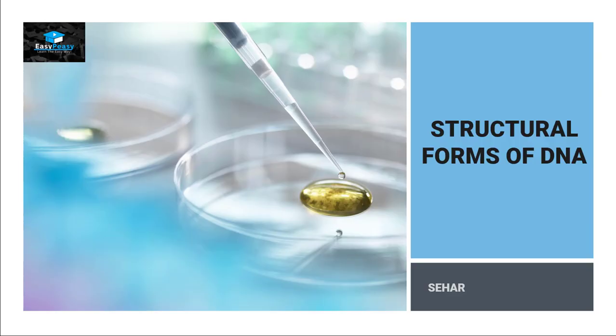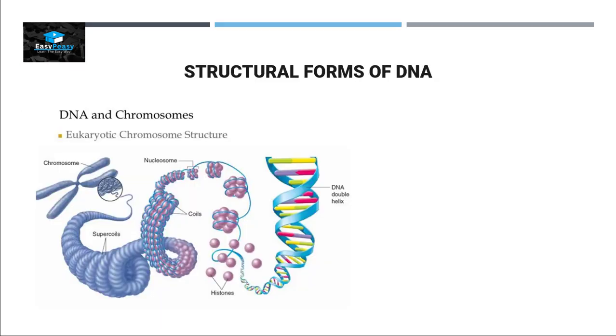Hello, this is Sahir from ECPC, and the topic we are going to discuss today is structural forms of DNA. As we know, the DNA coils upon itself and is present in the nucleus of a eukaryotic cell. The total amount of DNA present inside the cell is 1.8 meters, while the diameter of the nucleus is around 2 micrometers in length.